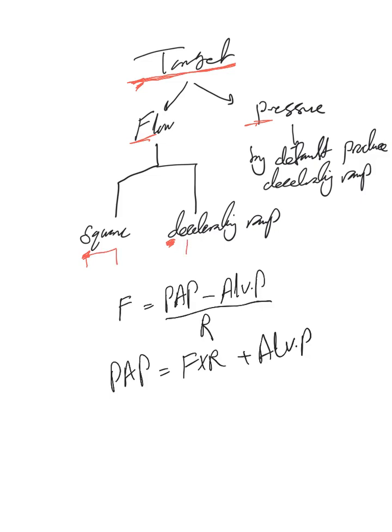This is like this and this is like this. With pressure target, by default the flow is changing, and it's by default decelerated ramp for the reason we explained last video. But the pressure is the target here.